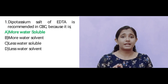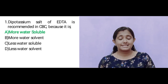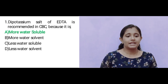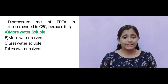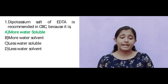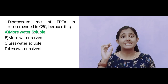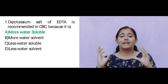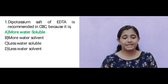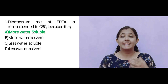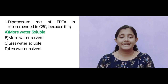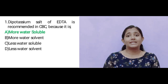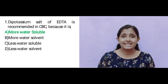EDTA inhibits clotting by chelation of calcium. EDTA's advantage is that it does not cause distortion of cells — it preserves the original shape and size. That is the most important, ideal quality of EDTA. The answer is Option A: more water-soluble, because this property helps preserve our cells.